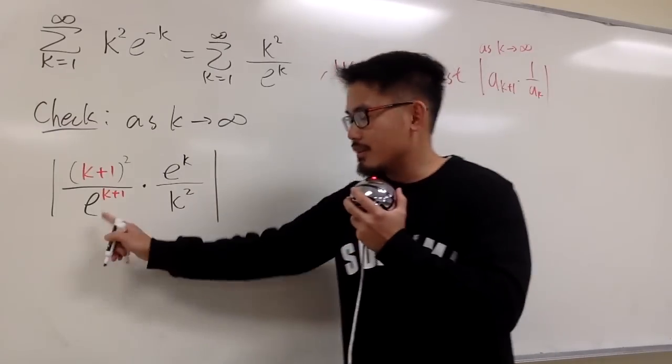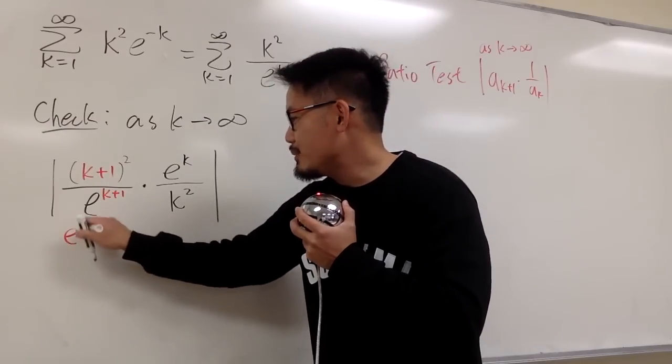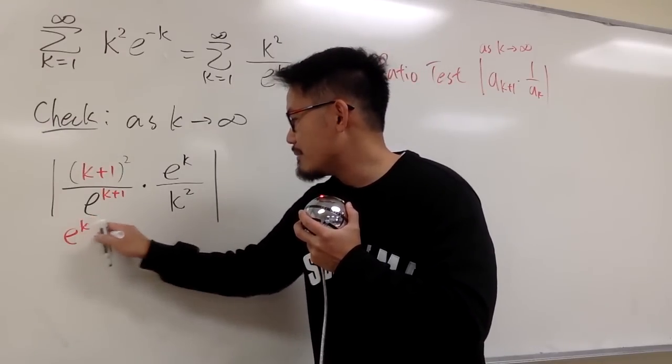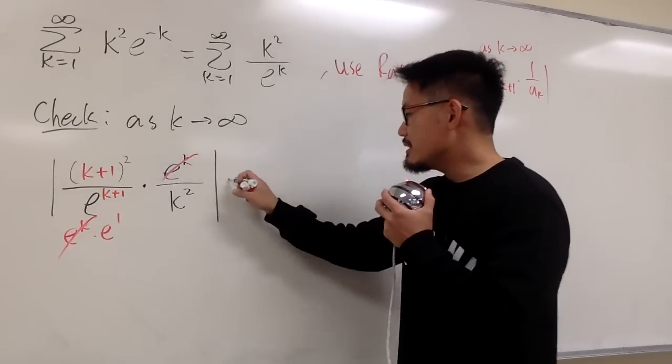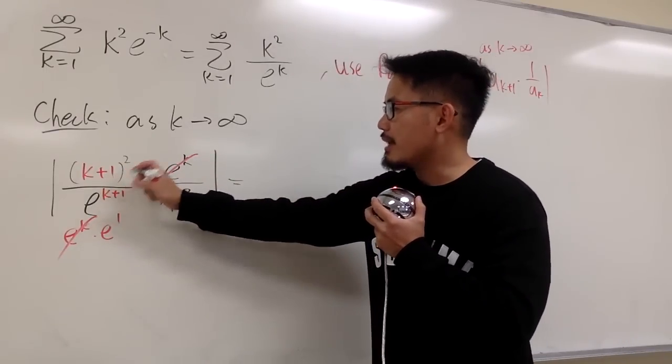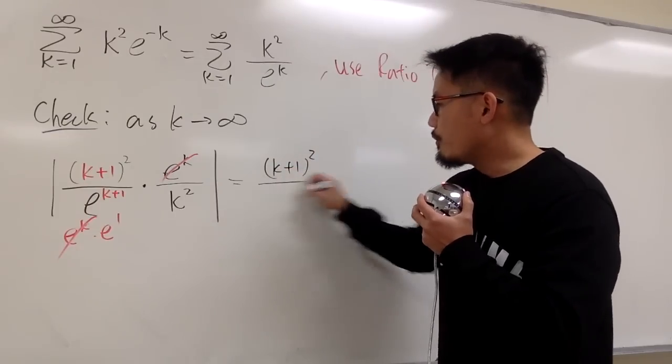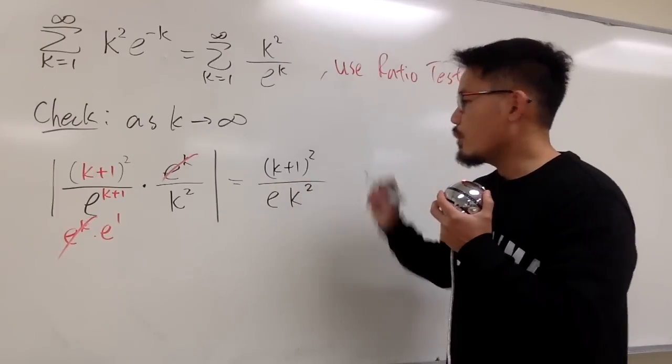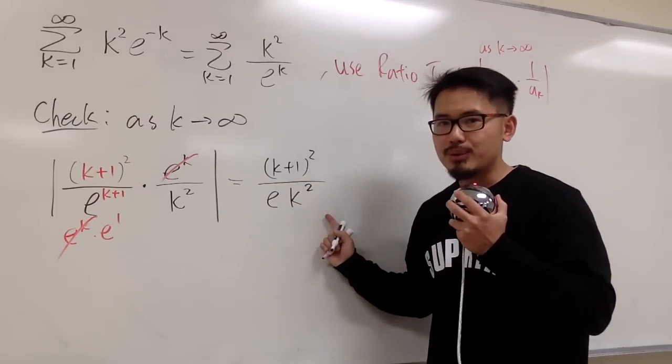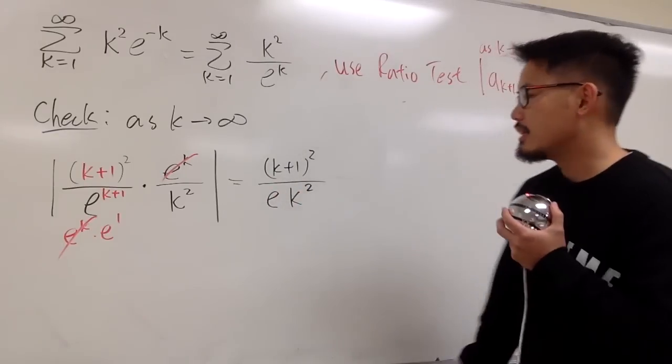And then simplify this. This is e to the k+1, e to the k times e to the first. First, this and that will cancel, and we're looking at this as, on the top, we have (k+1) squared, over, on the bottom, we have e times k squared. And do we need the absolute value? We don't, because everything here is positive, right?